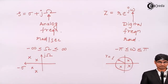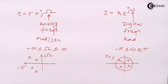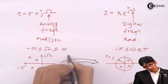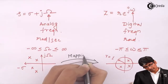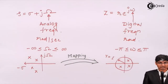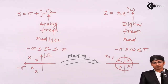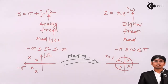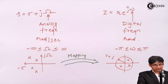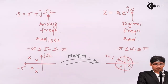When designing a digital filter from an analog filter, we must take care of this stability factor. Stable systems in the analog domain must remain stable in the digital domain. This means poles on the left-hand side of the s-plane must be mapped inside the unit circle in the z-plane. Poles on the jω axis must land on the unit circle, and poles on the right-hand side must fall outside the unit circle.